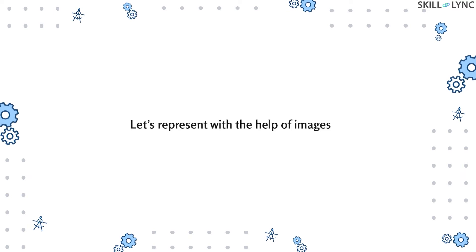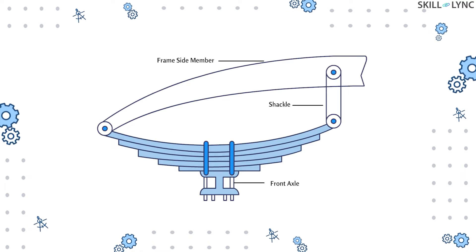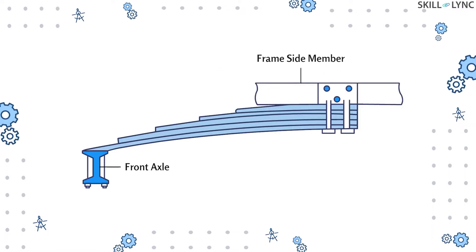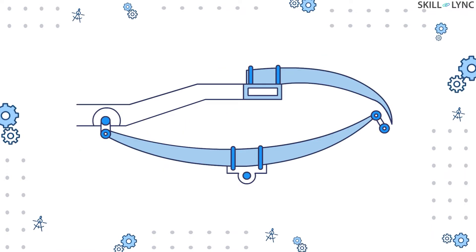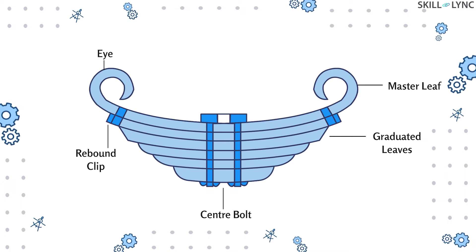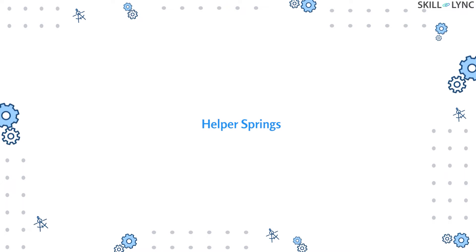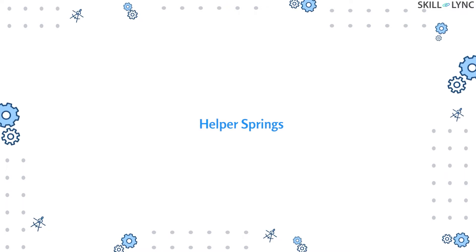Leaf springs are further classified into different types based on their design. These are semi-elliptical spring, quarter elliptical spring, three-quarter elliptical spring, full elliptical spring, transverse spring, and platform type spring.